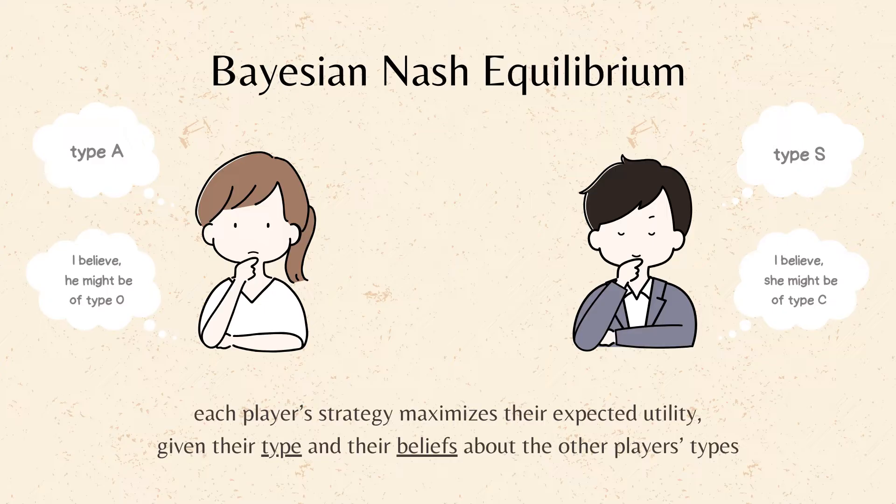This means that no player can increase their expected utility by unilaterally changing their strategy, taking into account their own type and the strategies of the other players.